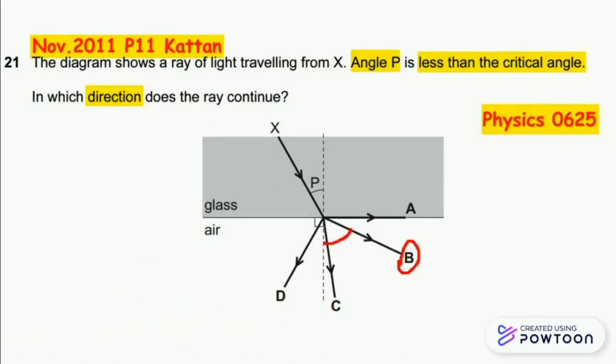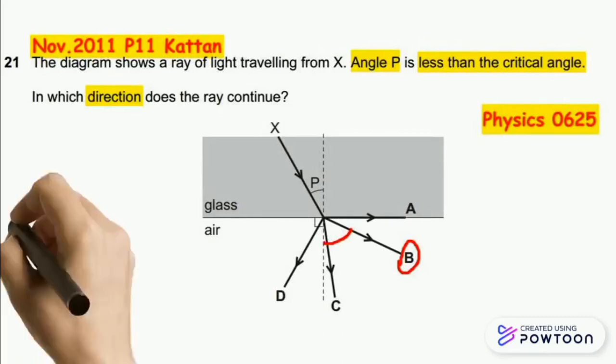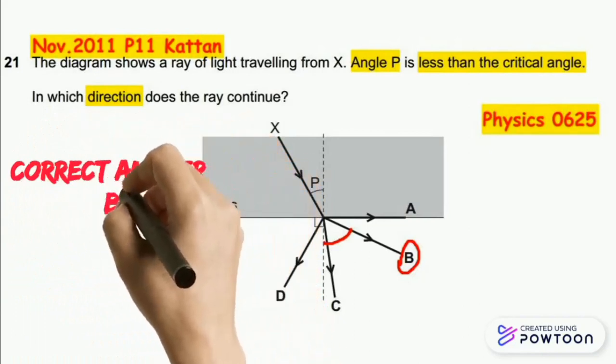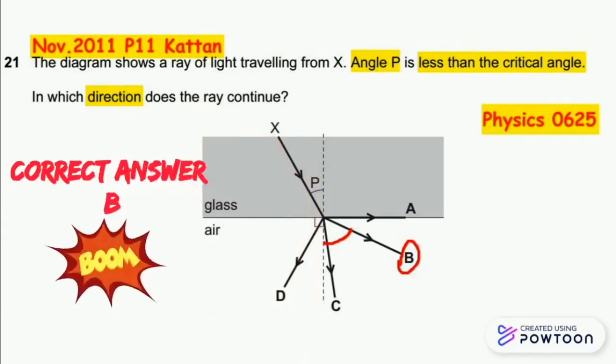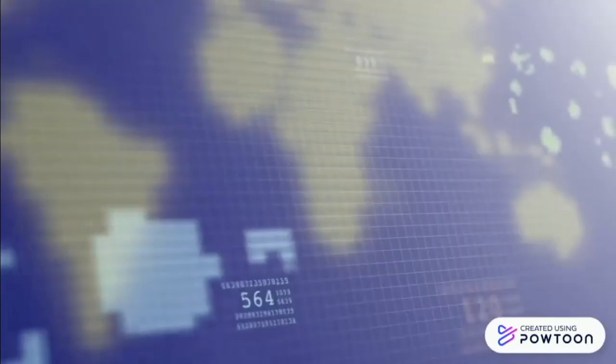The refracted ray exits away from the normal with a greater angle of refraction, more than the angle of incidence P, due to the increasing speed of light in air compared to glass. So the correct answer is B.